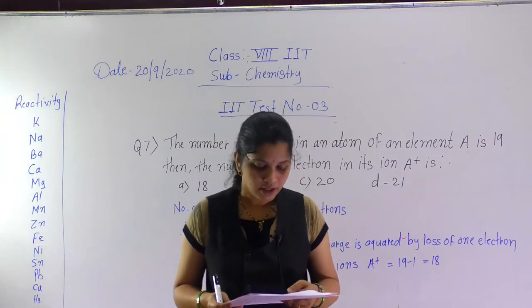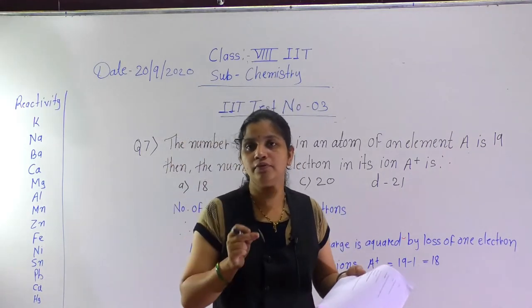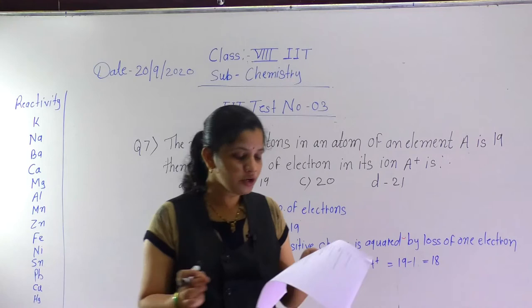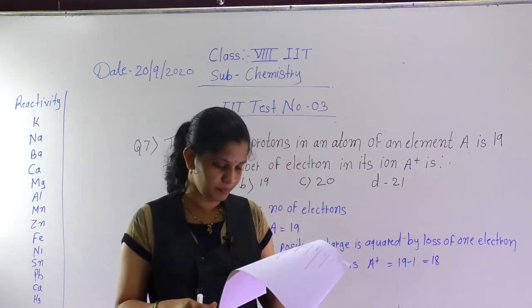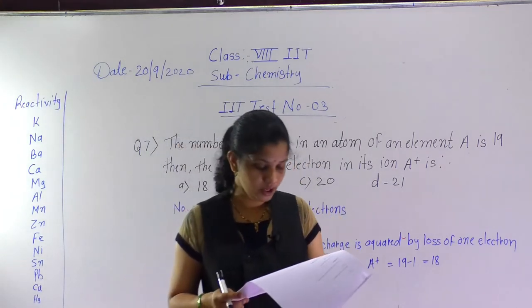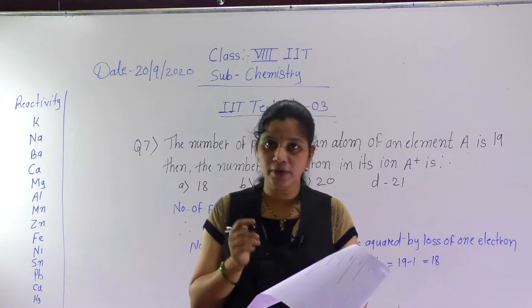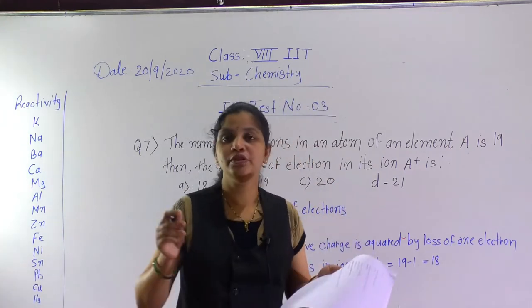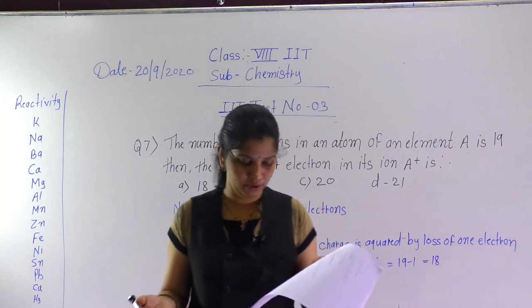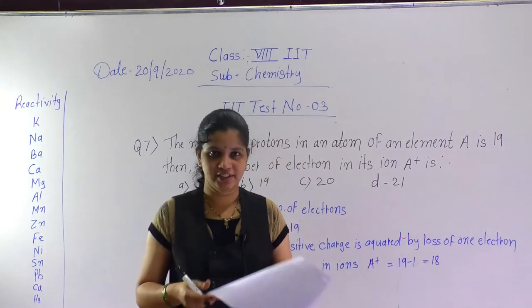Question number 6: the non-metal which is liquid at room temperature is. Read the question carefully — they ask about a non-metal, not a metal. The options are mercury, bromine, carbon, and helium. The correct answer is option B, bromine. Most non-metals are in solid or gaseous state, but bromine is the exception — it exists in a liquid state.